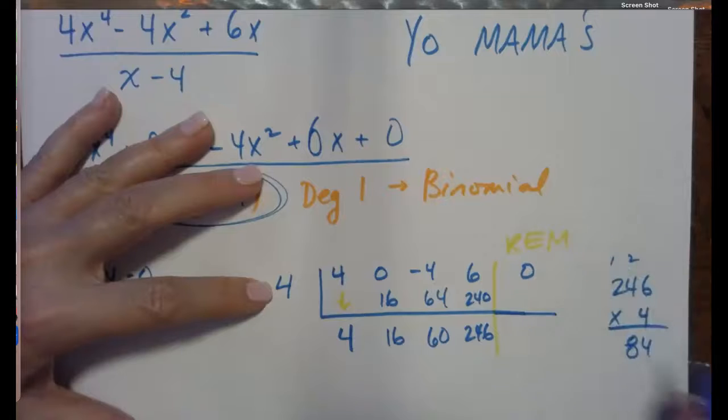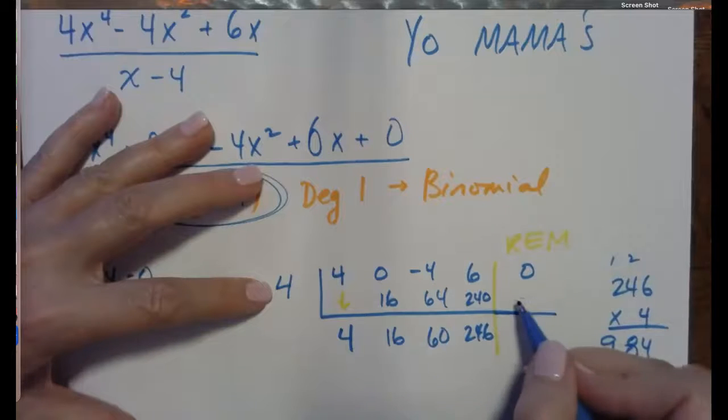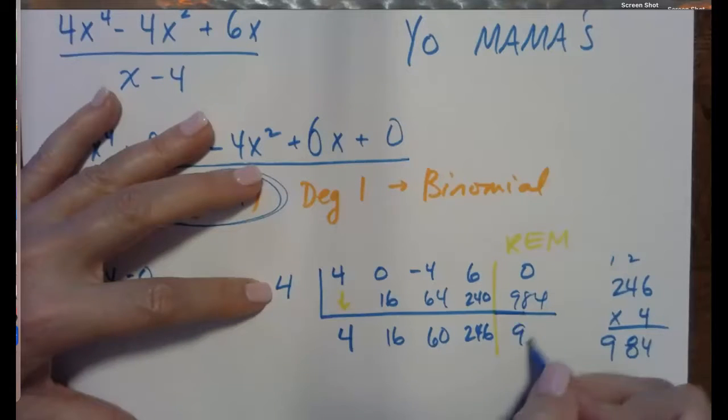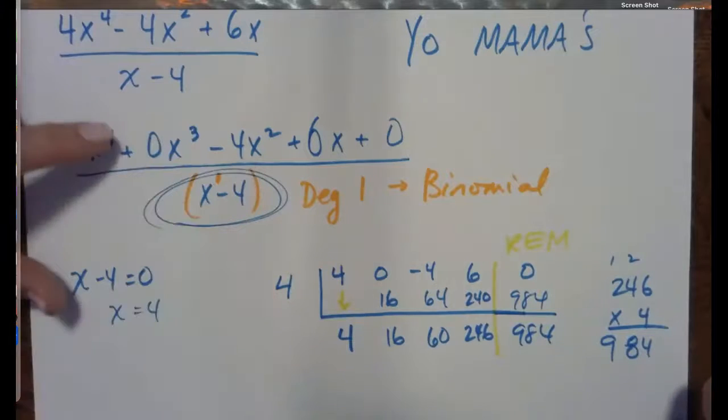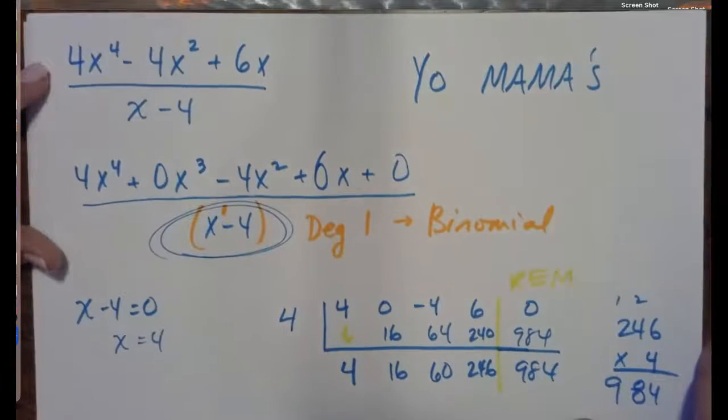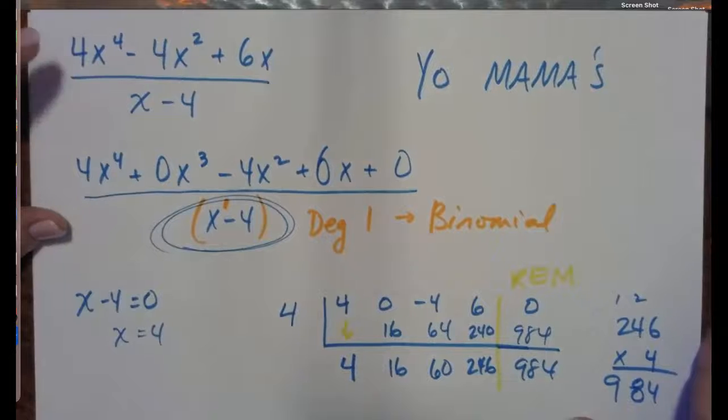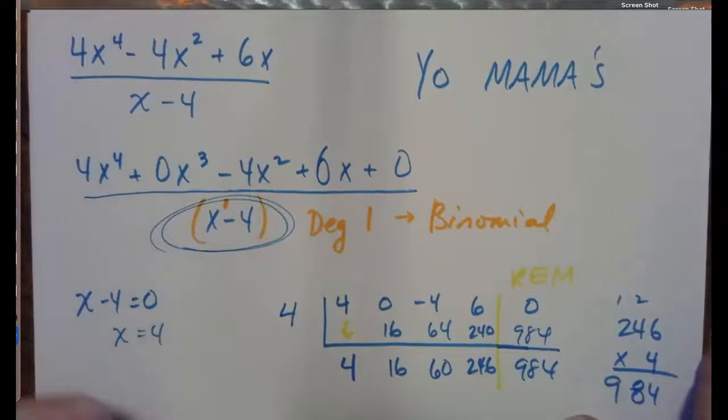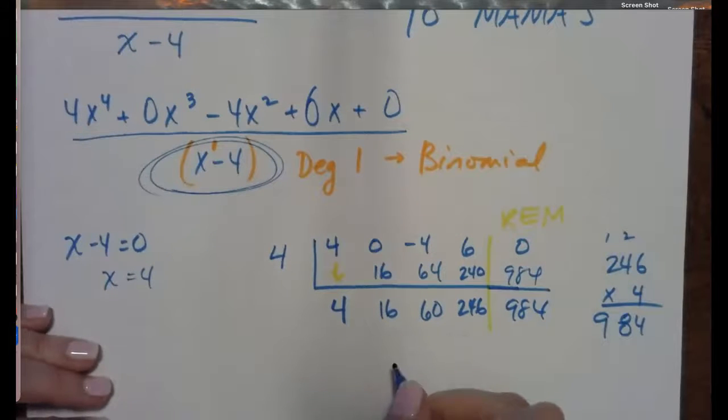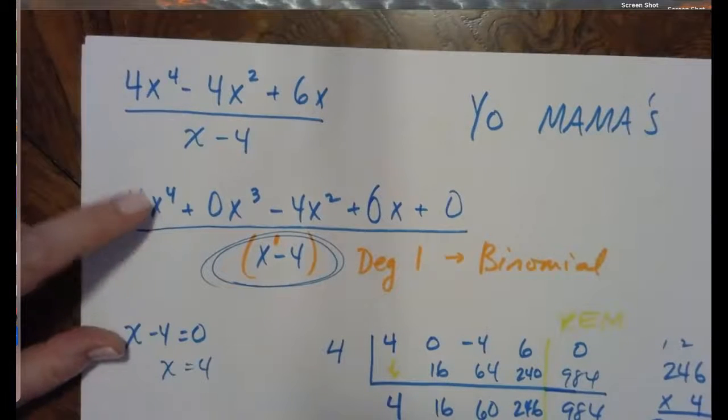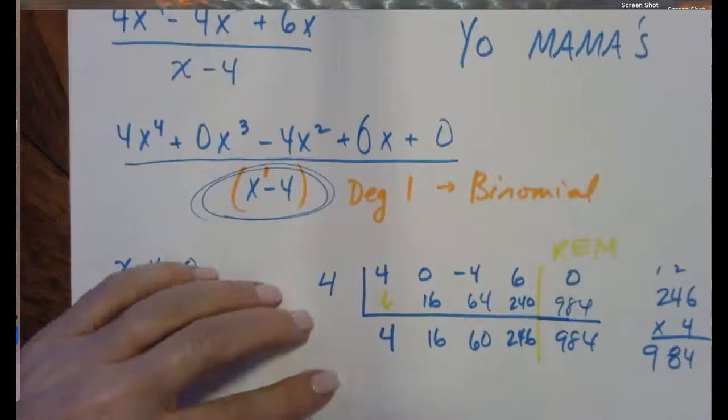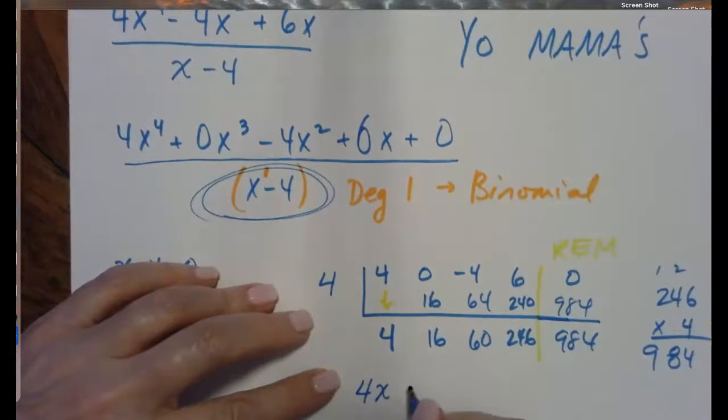2, 18, and 984. And then, of course, 984 plus 0 is 984. So really huge remainder here. So what that means is that x minus 4 is not a factor of the dividend if we have a remainder that large. So our quotient, we just divided by x to the first, and our dividend started with 4x to the fourth. So our quotient here is going to be 4x to the third. Remember, remainder.